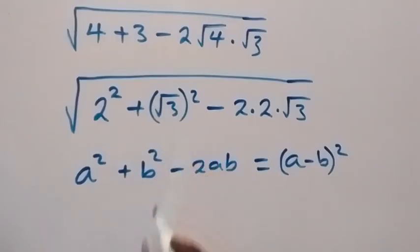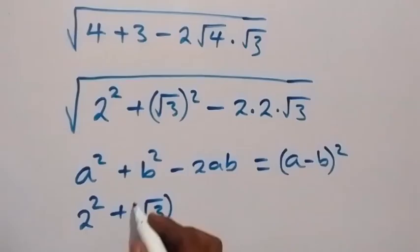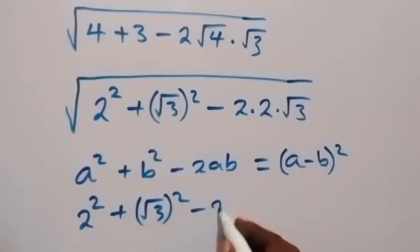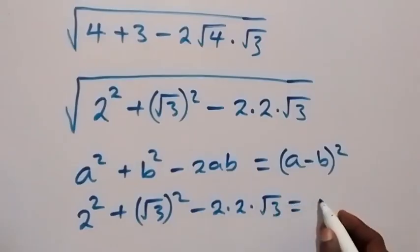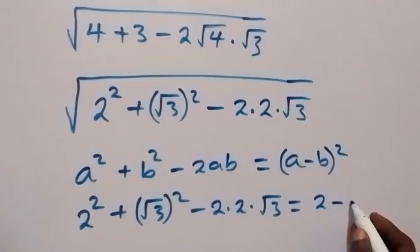From here, that is, we have 2 square plus root 3 all square, minus 2 times 2 times root 3, will now be the same thing as 2 minus root 3 all square.